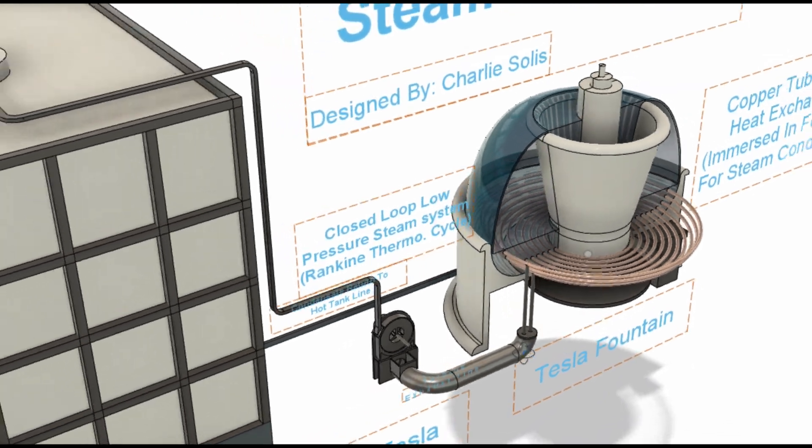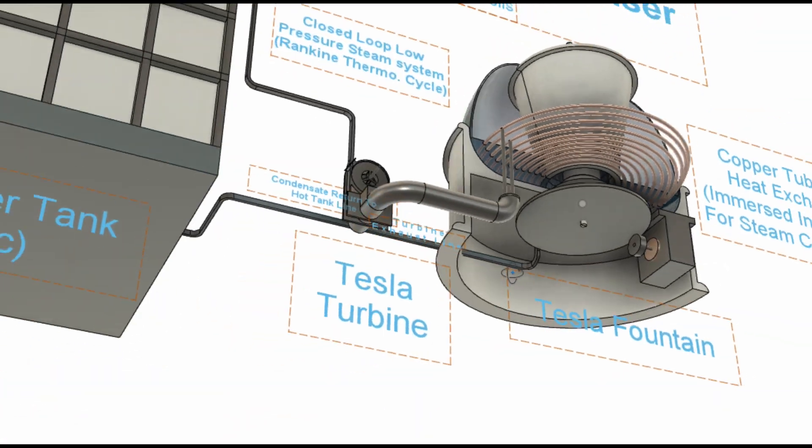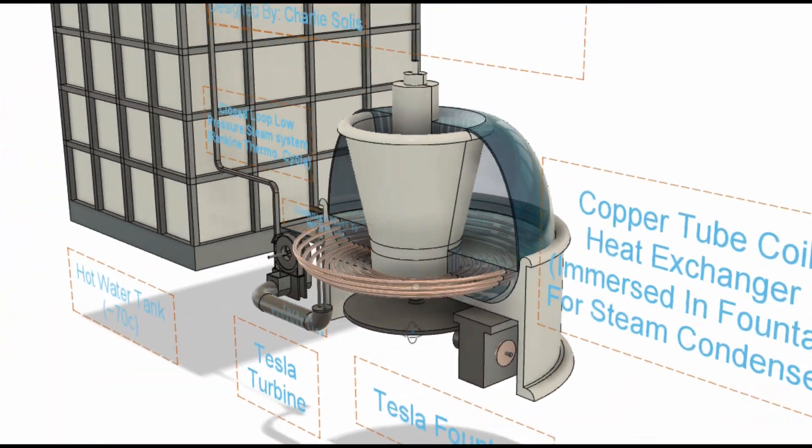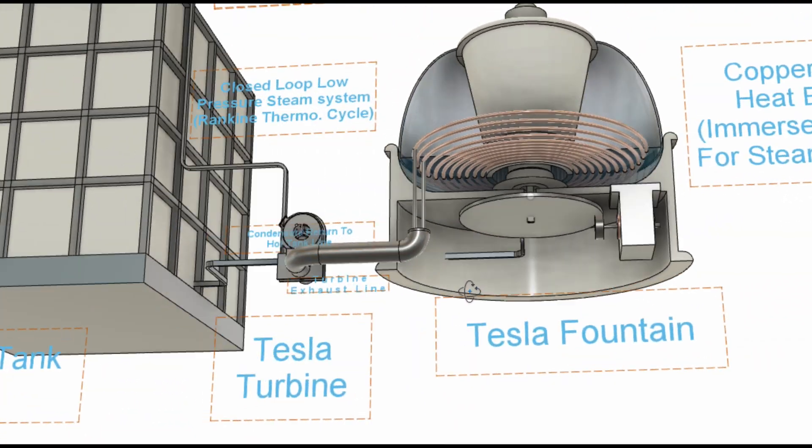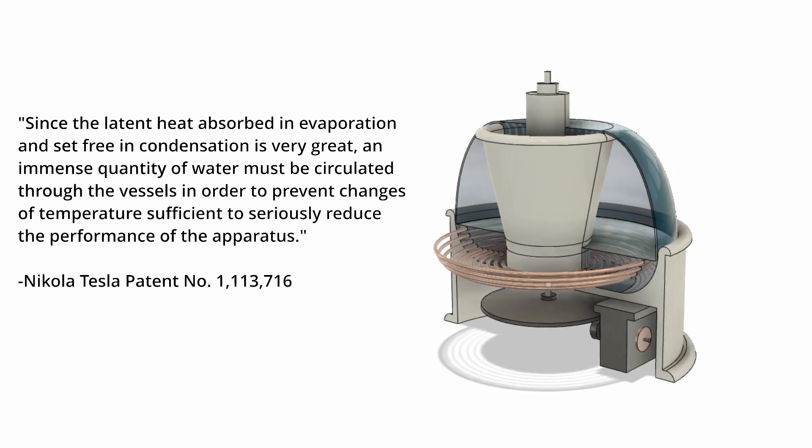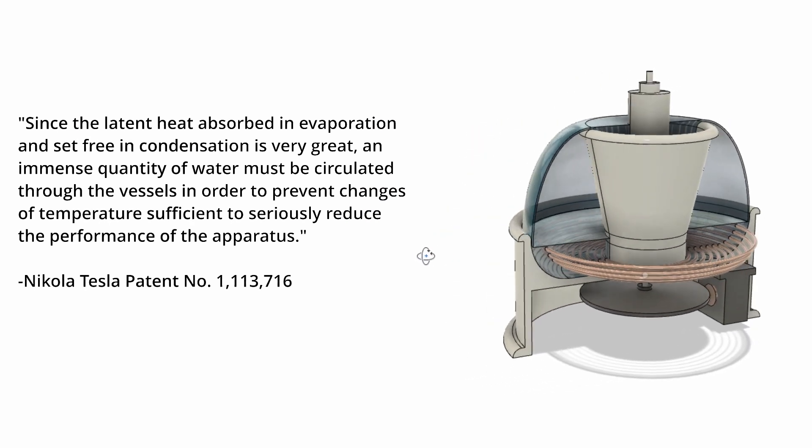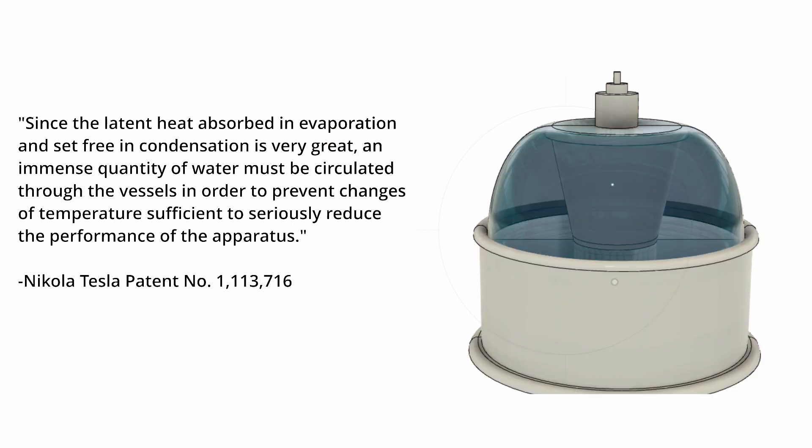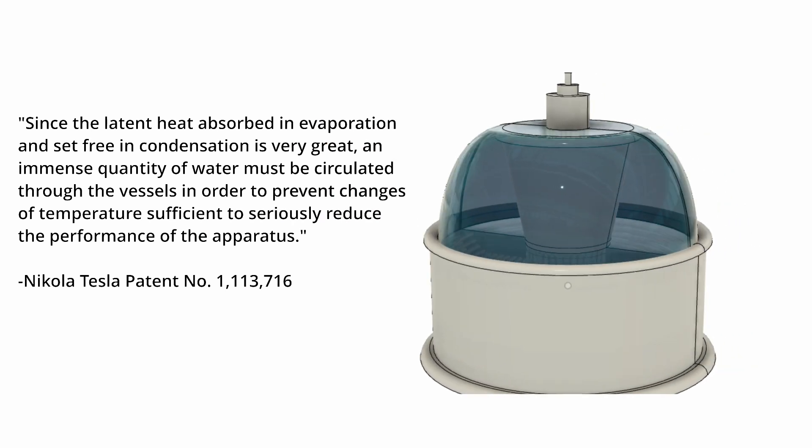If it requires too much energy to circulate the cooling medium, which cools the condensing section, the whole system is bunk, and he specifically talks about this in his article, Our Future Mode of Power, which a link to a copy of it can be found in the description. Tesla is quoted, Since the latent heat absorbed in evaporation and set free in condensation is very great, an immense quantity of water must be circulated through the vessels in order to prevent changes of temperature sufficient to seriously reduce the performance of the apparatus.